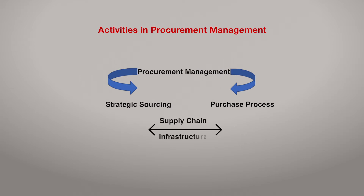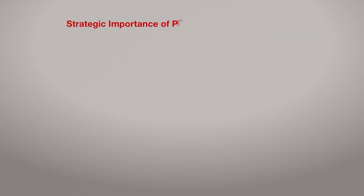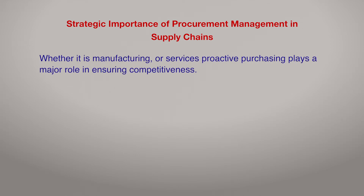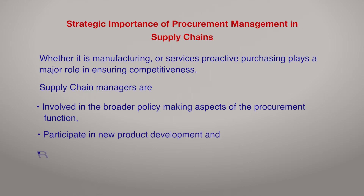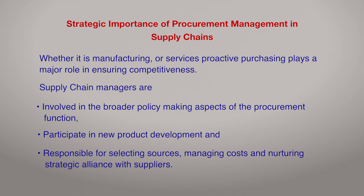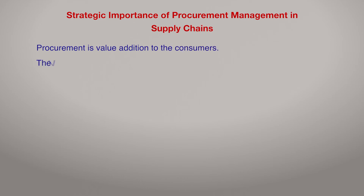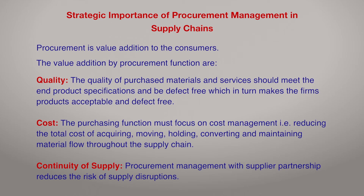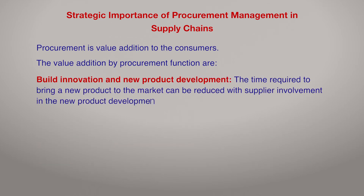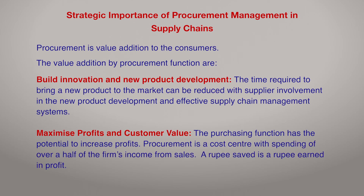The two major activities in procurement management are strategic sourcing and the purchasing process. Supply chain management is the infrastructure for effectively carrying out the procurement management function. Whether in manufacturing or services, proactive purchasing plays a major role in ensuring competitiveness. Supply chain managers participate in policy-making, new product development, selecting sources, managing costs, and maintaining strategic alliances with suppliers. Procurement adds value through quality, reduced cost, continuity of supply, innovation, maximizing profits, and customer value.